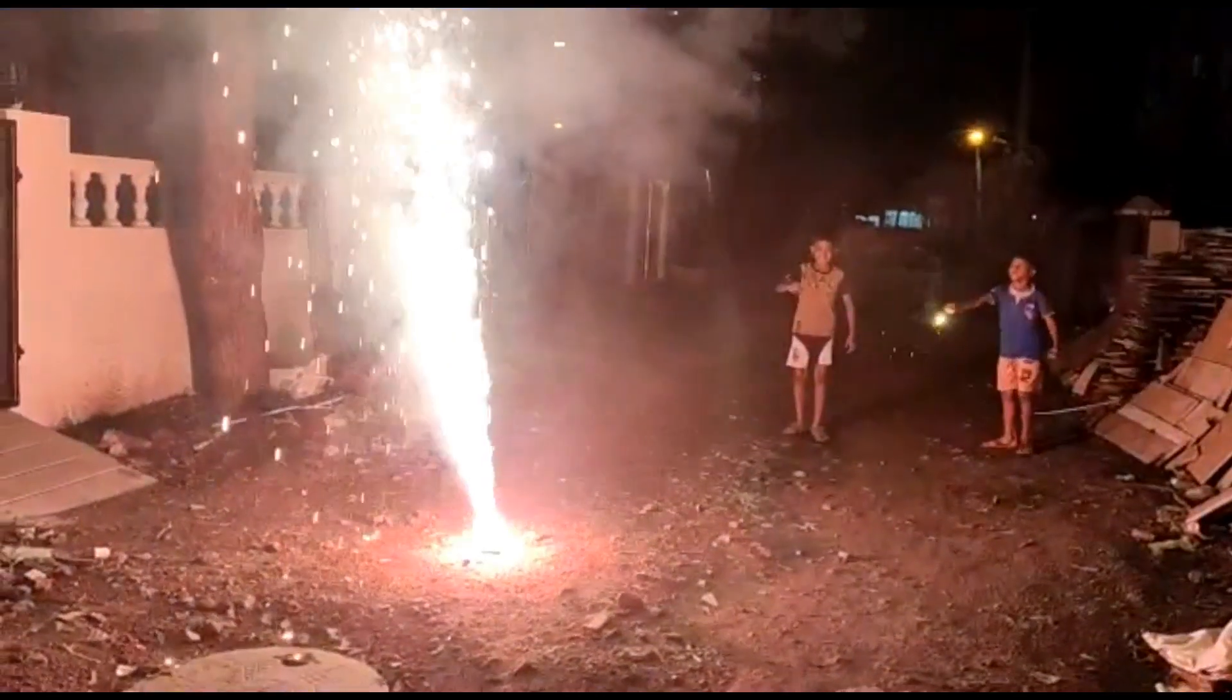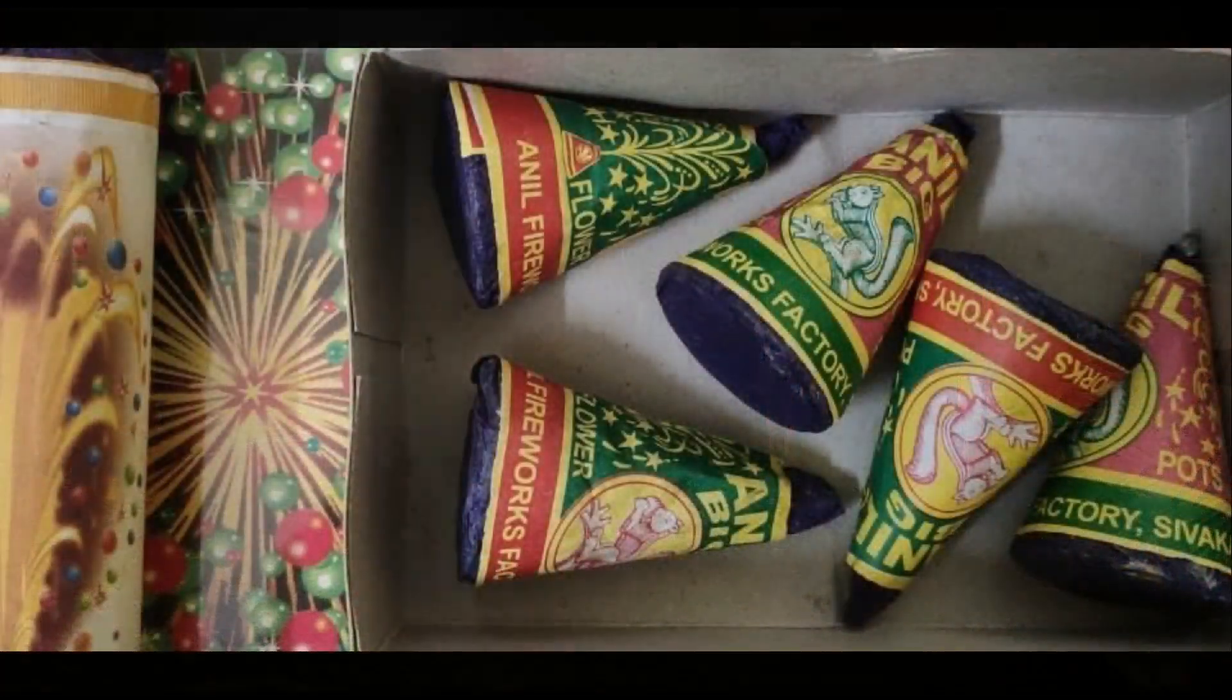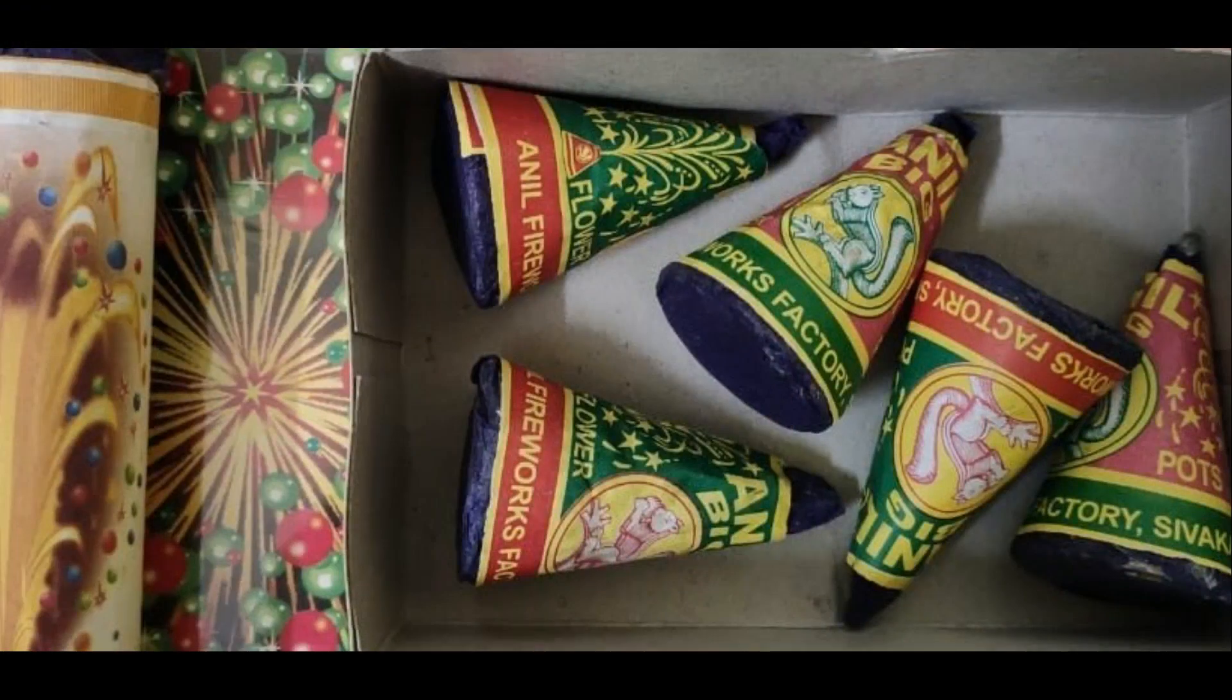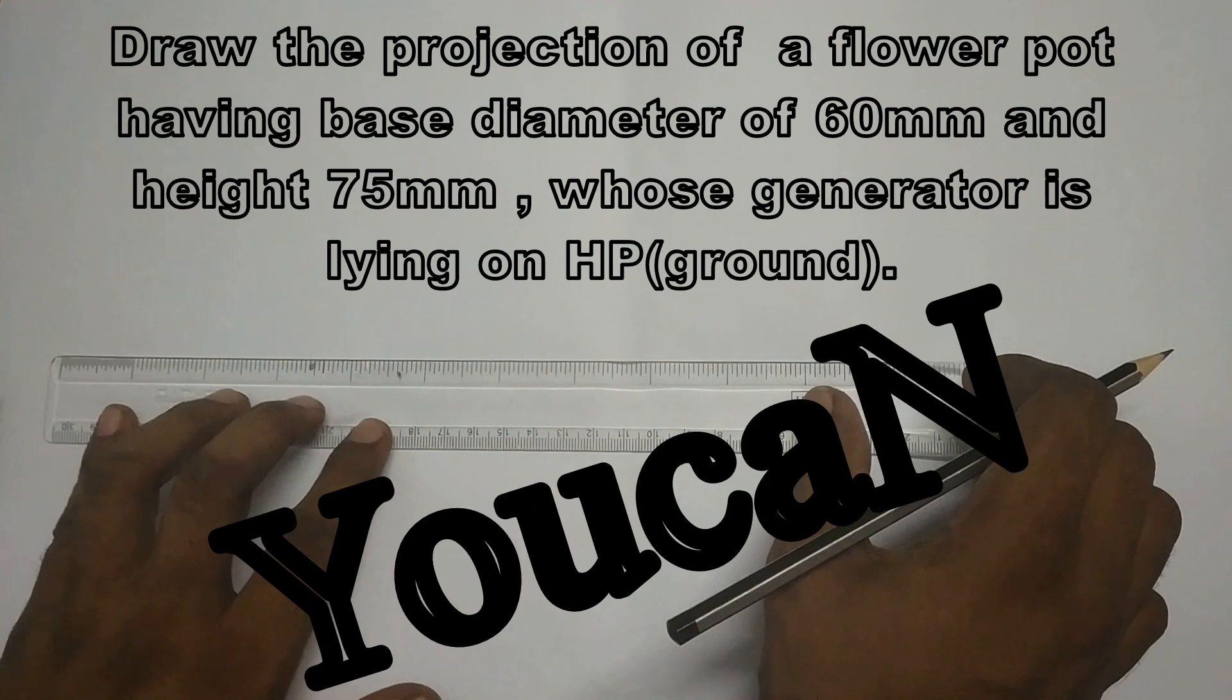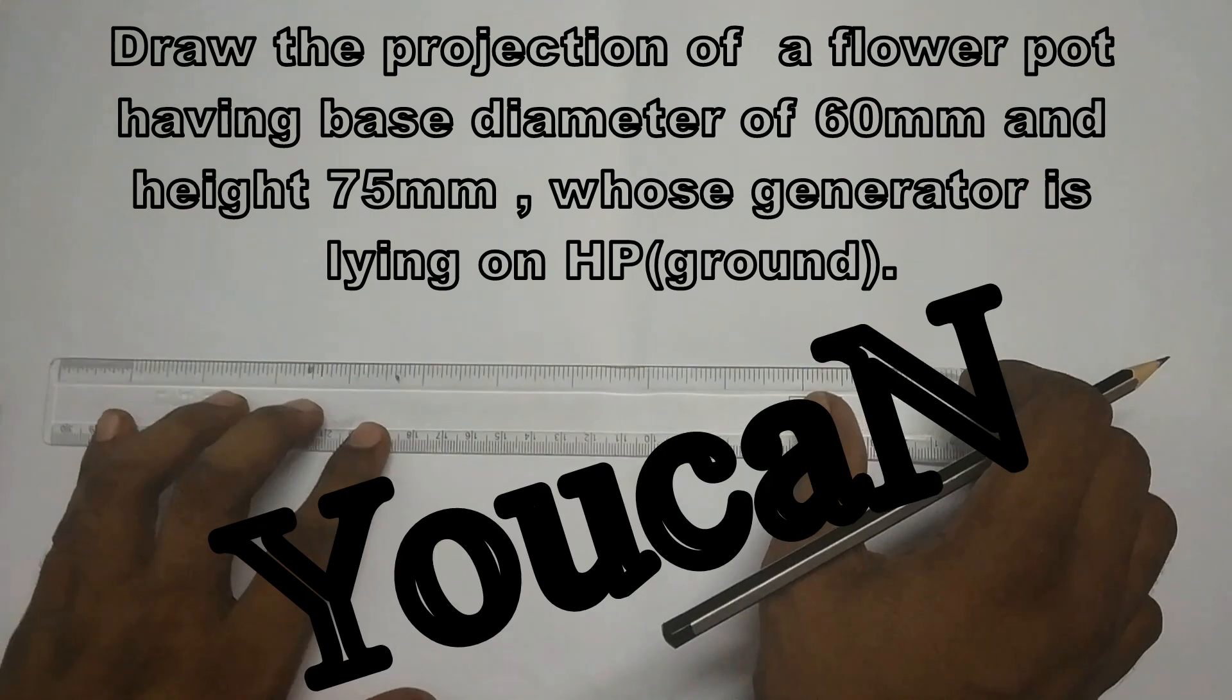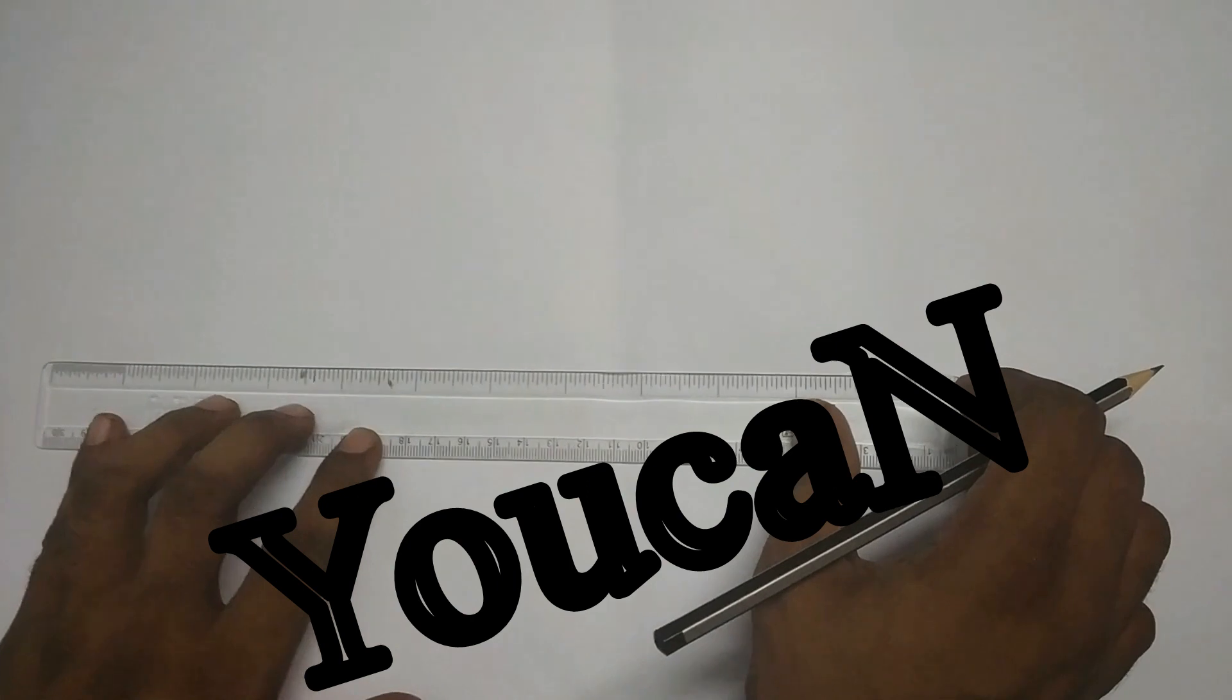The condition is the generator of the flower pot is lying on HP. The flower pot have a base of 60 mm diameter and axis height 75 mm. Draw the projections of the flower pot.